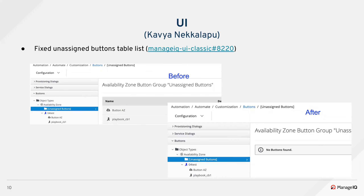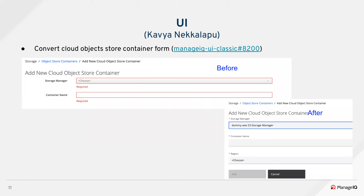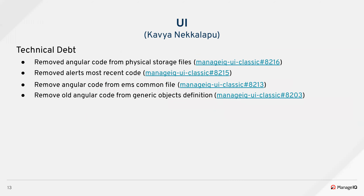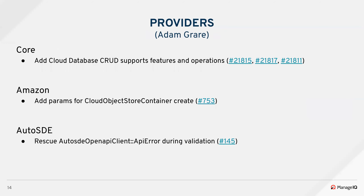In the buttons view, an assigned buttons group was incorrectly showing assigned group buttons — that bug was fixed. Gilbert converted the cloud object storage container form from Angular to React and added most of the schema fields to the provider side as well. Jeffrey converted the cloud volume create backup and restore backup forms to React from Angular. Gilbert also removed stale Angular references in the HTML files. These PRs are all technical debt. That's all from UI — over to Adam.